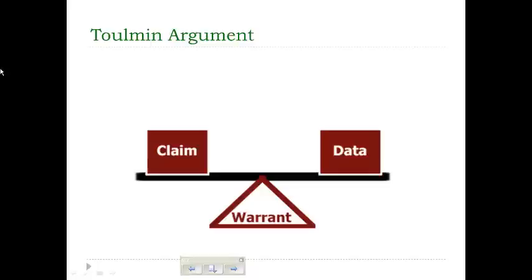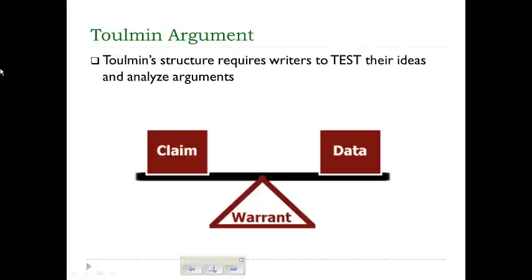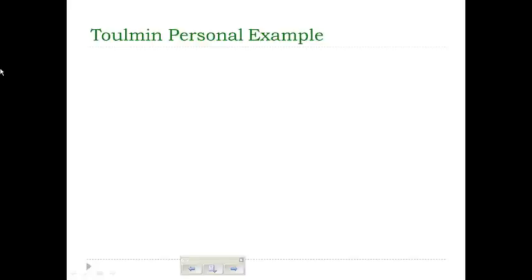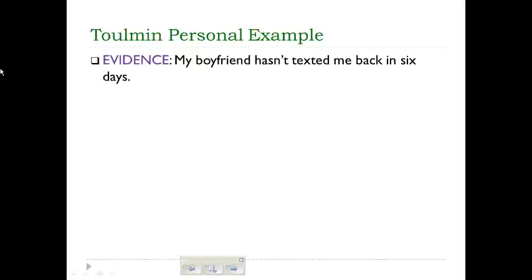Make sure all your parts are in balance. Toulmin's structure requires writers to test their ideas, so think through that warrant — talk to your friends about it, ask whether these two pieces go together, and have your teacher look at what you've written so you don't have any questionable warrants. Let's go through a personal example of how this could pop up in everyday experience. For evidence: your boyfriend hasn't texted you back in six days.